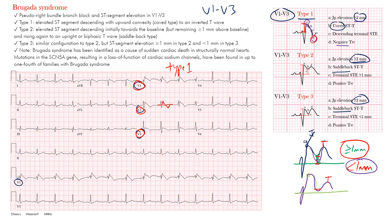We consider things syndromes when they have clinical manifestations or symptoms, or are associated with sudden cardiac death. Brugada syndrome has been identified as a cause of sudden cardiac death even in structurally normal hearts — so even young people are at risk. These mutations involve the SCN5A gene, which represents a loss of function of cardiac sodium channels, and can be found in up to one-fourth of families with Brugada syndrome. Screening the patient and family for genetic mutations may be helpful.